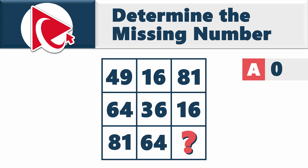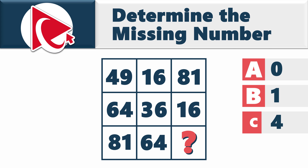Choice A: 0. Choice B: 1. Choice C: 4. And last but not least, choice D: 9.